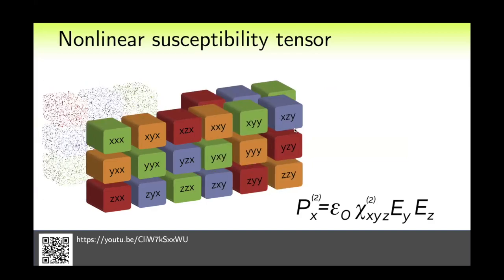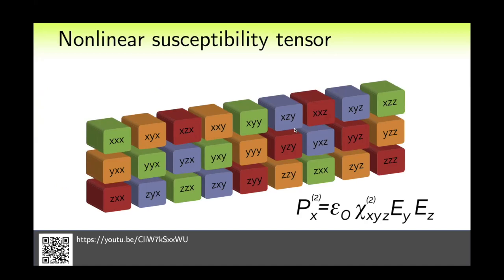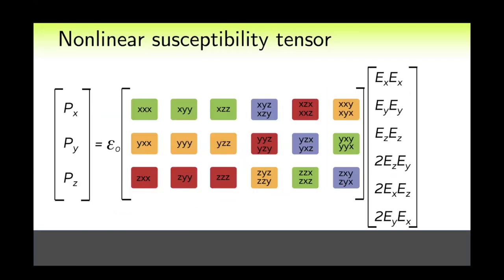First, let us arrange them in a more convenient form so that all of them are visible at once. Let us now consider the χ_xyz component. It connects the components of the incoming field along y and z with the polarization along the x-axis. But it doesn't really matter in which order we put the two field components. So, the χ_xyz tensor component must be equal to the χ_xzy tensor component. The same can be said about other pairs of components.